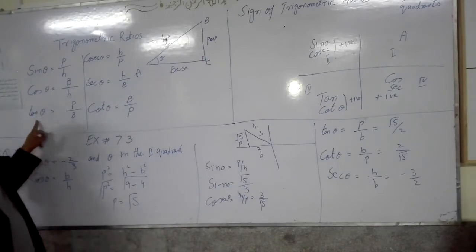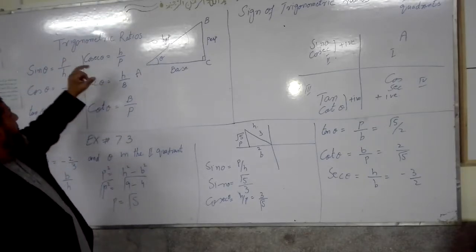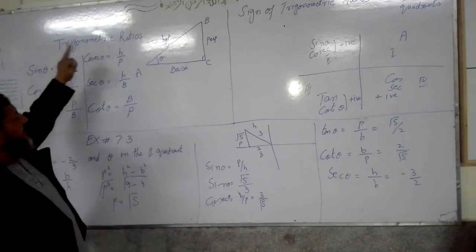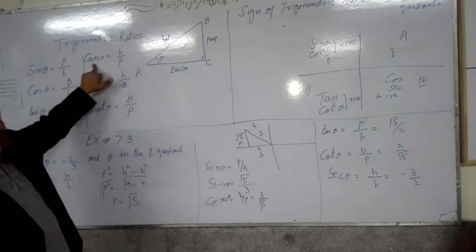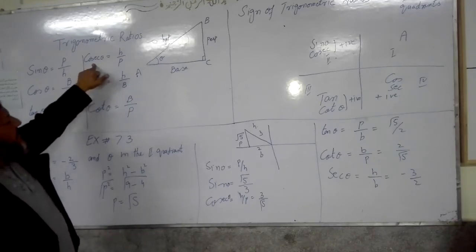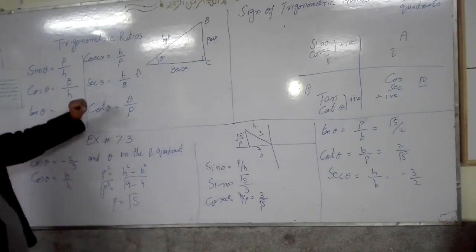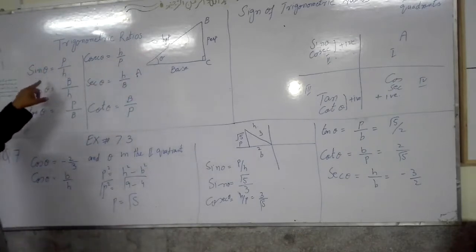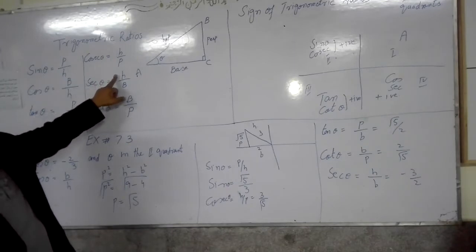Now for the reciprocals of trigonometric ratios. We have sin θ = perpendicular / hypotenuse. The reciprocal, hypotenuse over perpendicular, equals cosecant theta: cosec θ = 1 / sin θ = hypotenuse / perpendicular. Similarly, hypotenuse over base equals secant theta: sec θ = 1 / cos θ = hypotenuse / base.